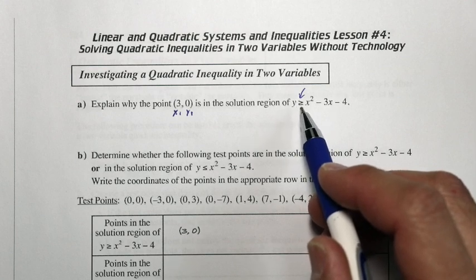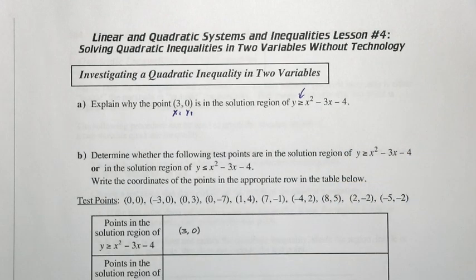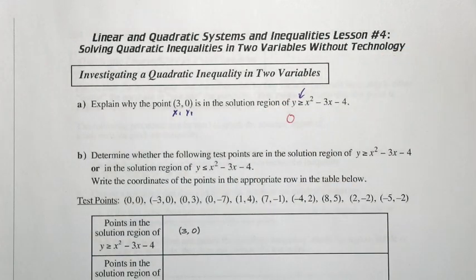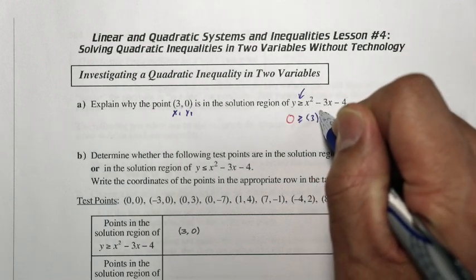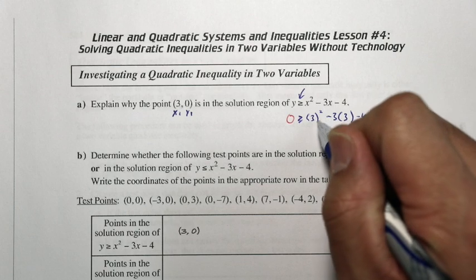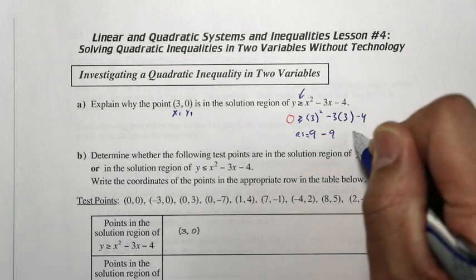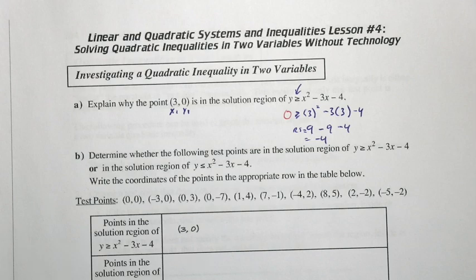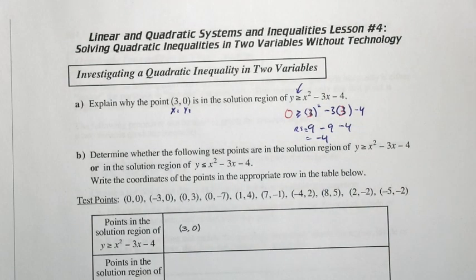Is the y value going to be equal to or greater than this whole expression? So if the y value here is 0, we get 3 squared minus 3 times 3 minus 4 on the right side. That's going to be 9 minus 9 minus 4, which equals negative 4. We substituted 3 for x.